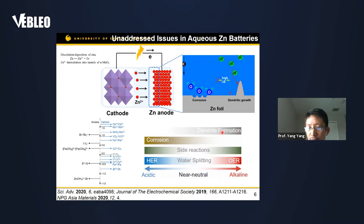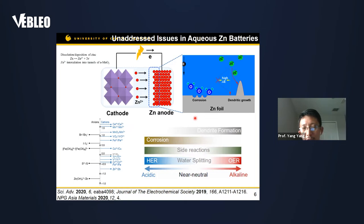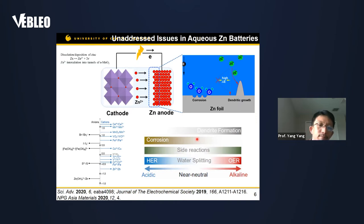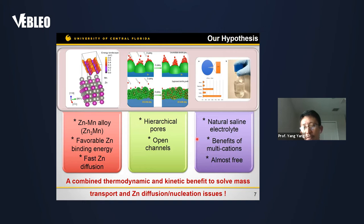These issues prevent zinc-based batteries from cycling for a very long time. Overall, dendrite formation, surface corrosion, and water splitting are the major challenges stopping the widespread use of zinc batteries in the market. These challenges are the motivation that inspires us — what issues we need to resolve to develop a better zinc battery.